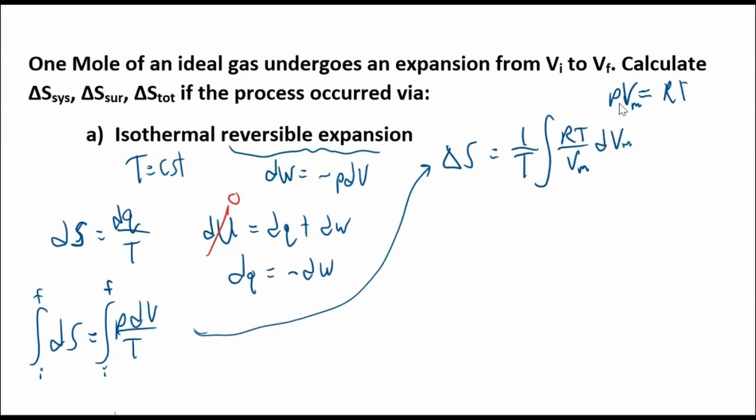So our p equals RT over Vm, integral of dV. It could be dVm. We don't have to. We could leave the n in. Actually, let's leave the n in. Doesn't matter. It comes out of the integral.